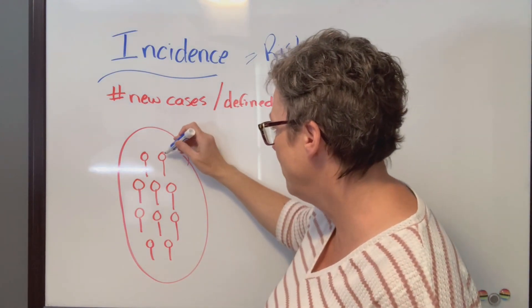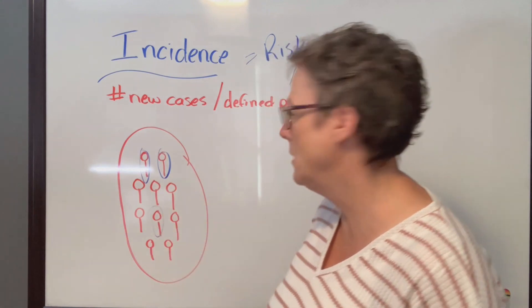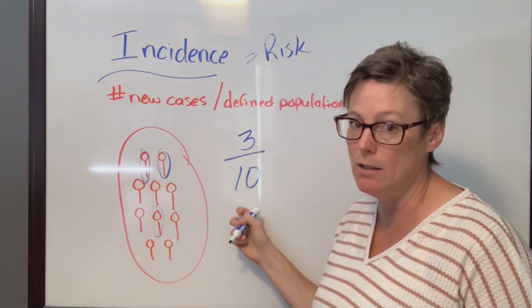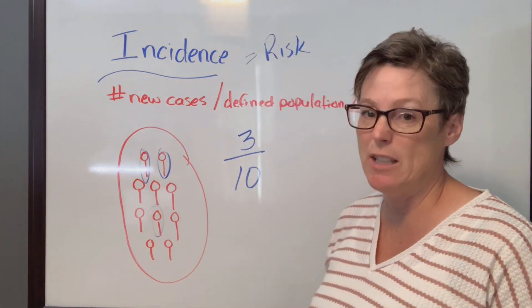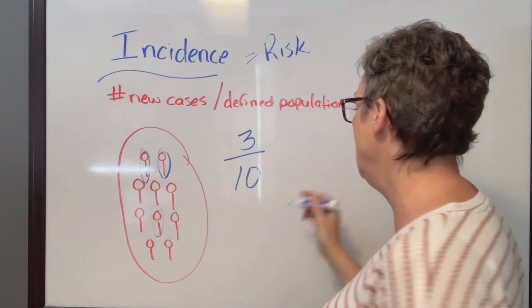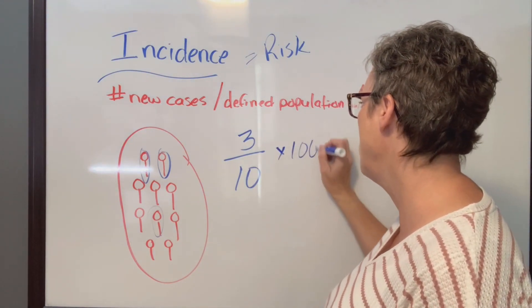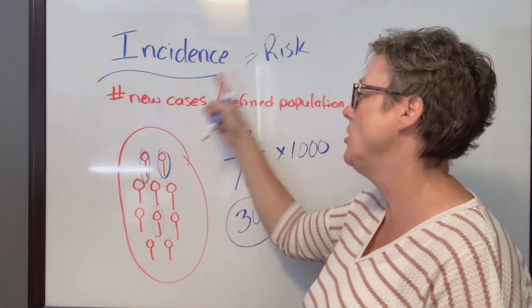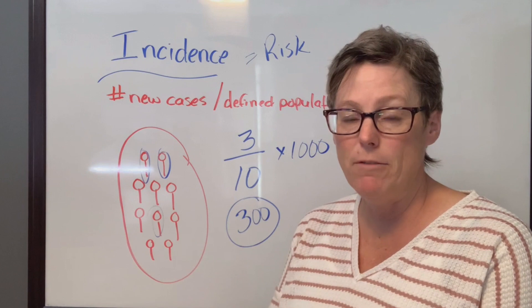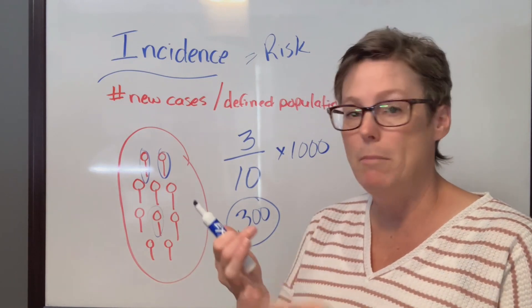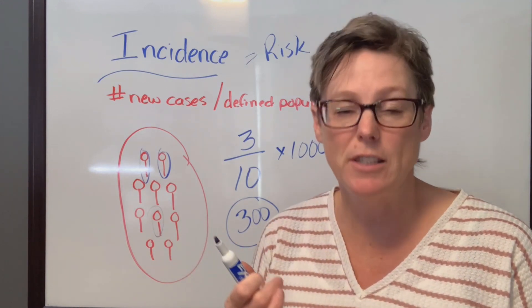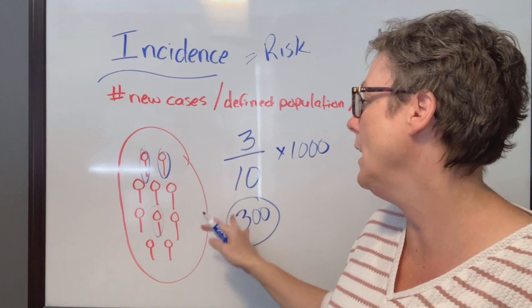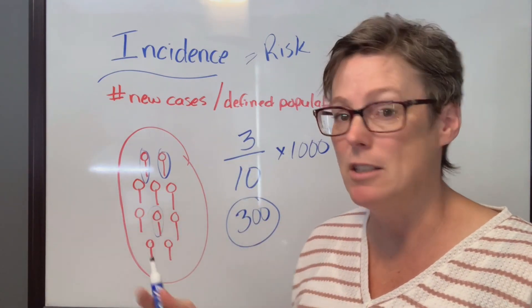Let's say this person, this person, and this person become infected — we now have three new cases in our population size of 10. If our community grows to 1,000 people and we multiply by 1,000, that tells us there is a potential 300 people that could move into new cases. This risk factor helps us plan and implement strategies — like making sure we had enough ICU beds and ventilators — and plan education and prevention such as swabbing and vaccinations to meet the demand.